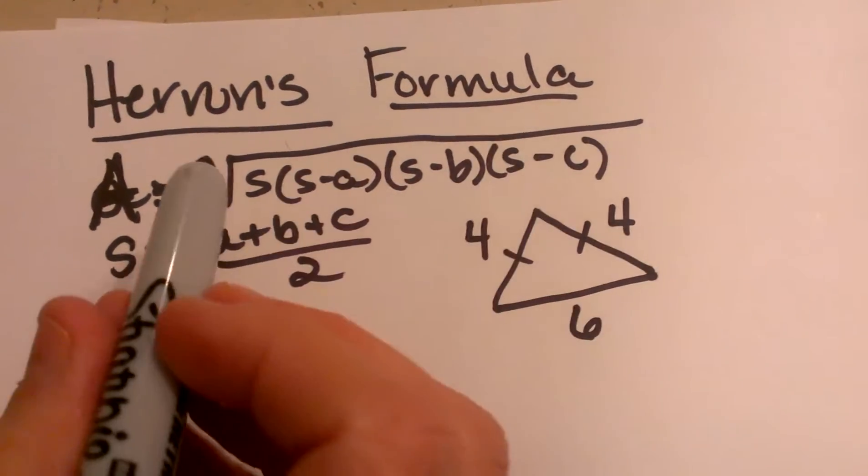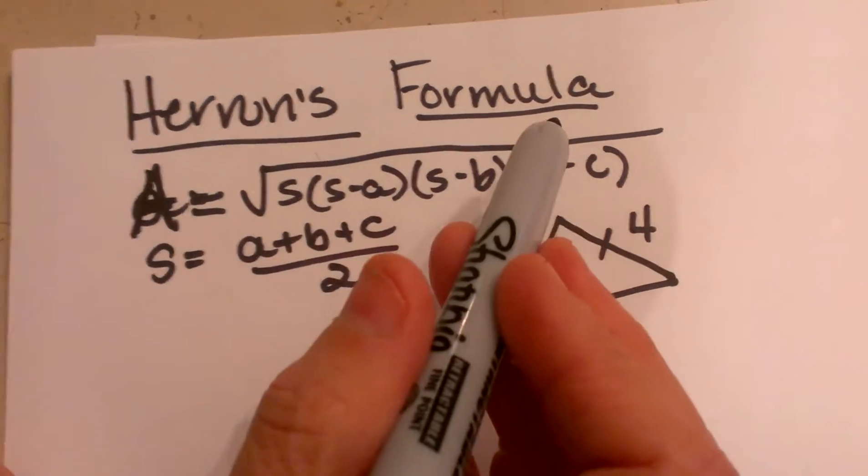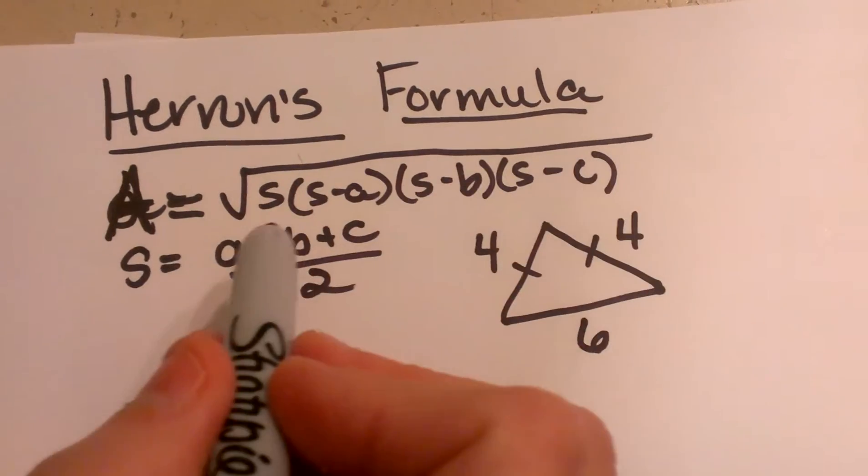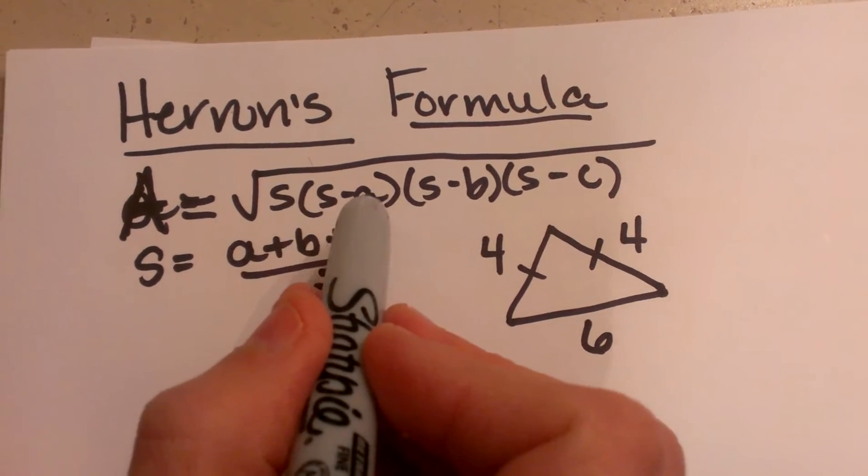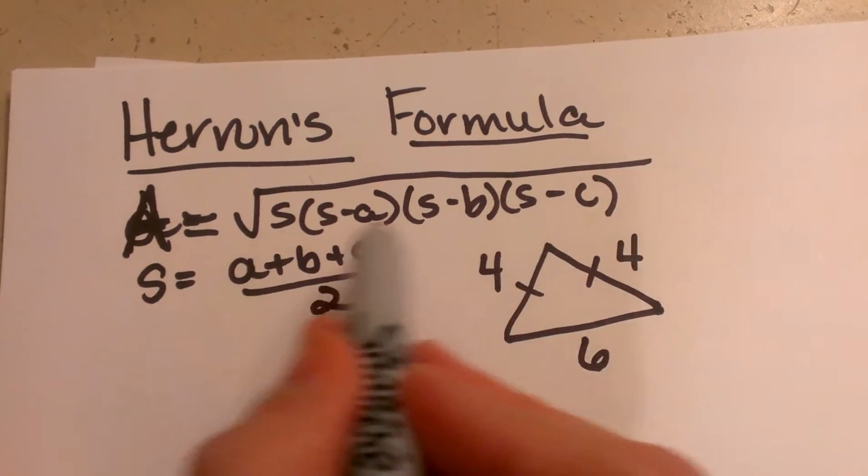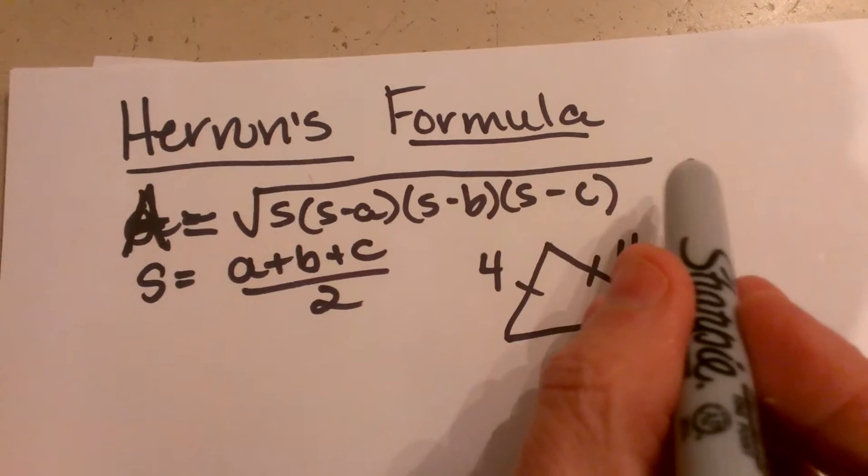Here is a video on how to find the area of a triangle using Heron's formula. The formula is A equals the square root of S times S minus A, S minus B, and S minus C. So you're going to multiply all those together and then take the square root of all that.